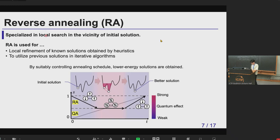Reverse annealing is one of the methods for quantum annealing, specialized for local search in the vicinity of a given initial solution. Reverse annealing can be used for local refinement of known solutions obtained by heuristics, or for utilizing previous solutions in an iterative algorithm. Here's an illustration: we control the annealing parameter S. Unlike standard QA, reverse annealing starts with a classical solution, gradually adds quantum effects, and then anneals the system, finally obtaining a better solution in the vicinity of the initial solution.